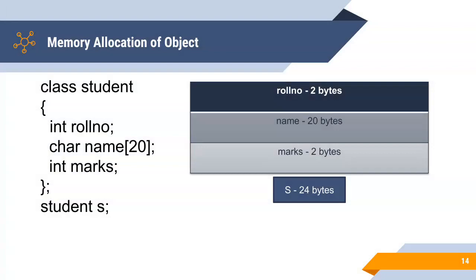S will occupy how many bytes? In general purpose machine, the integer occupies two bytes. And a character occupies one byte. And an integer again will occupy two bytes. Look at the diagram.